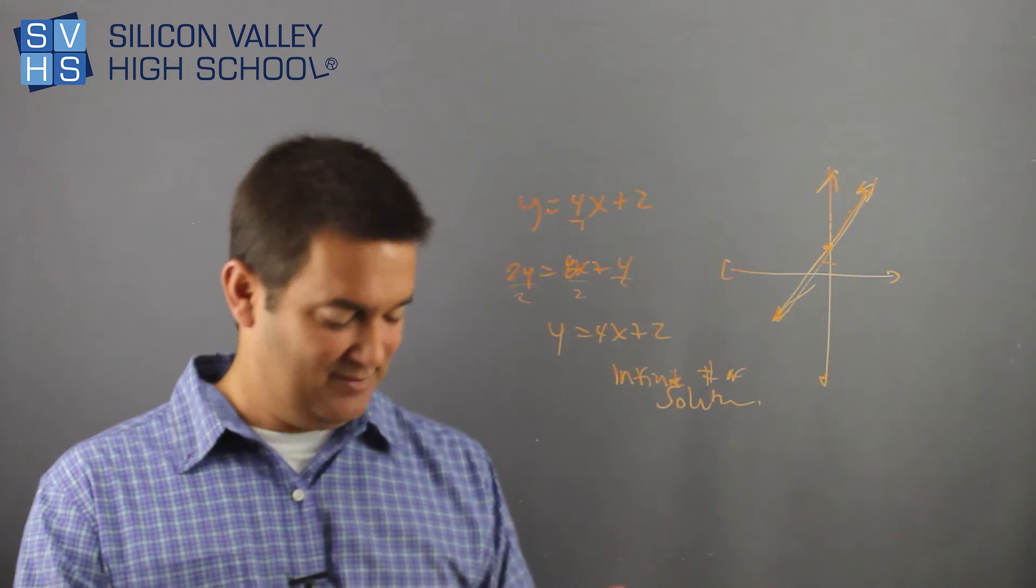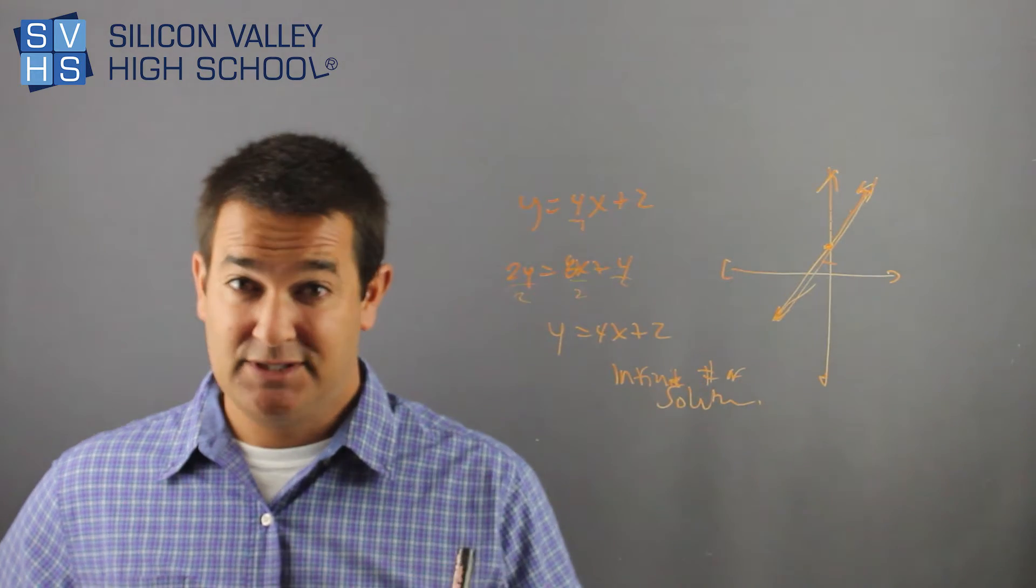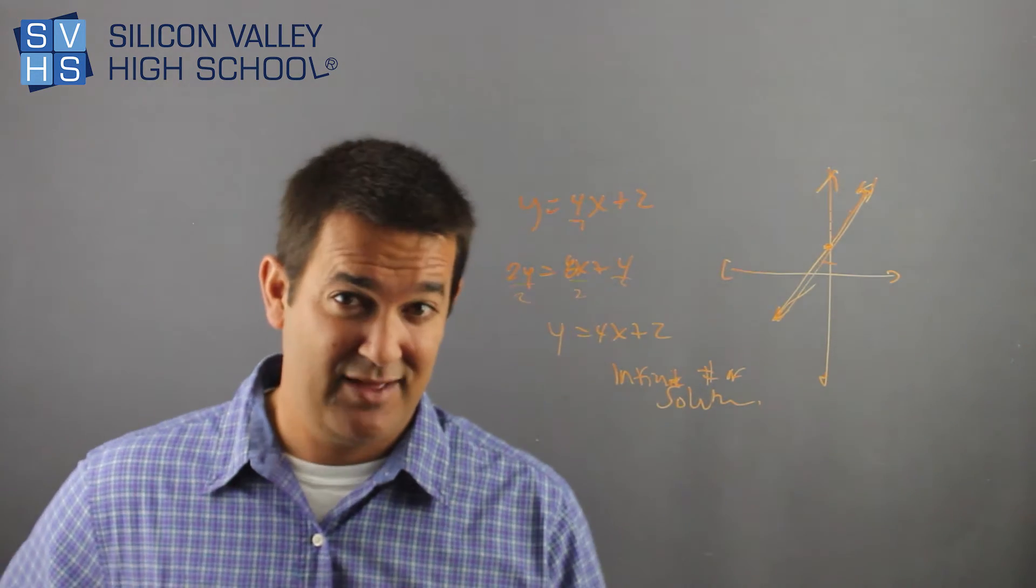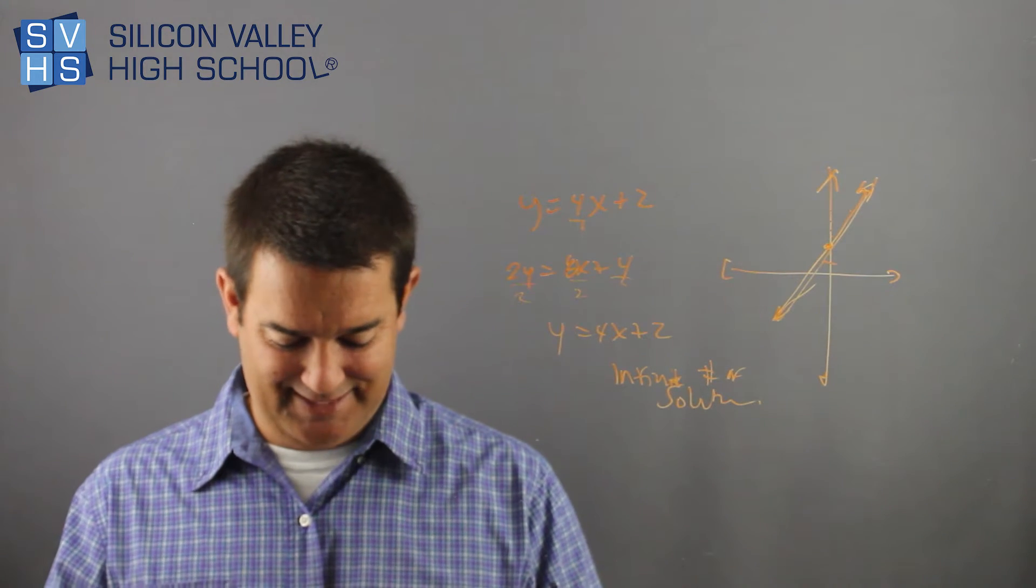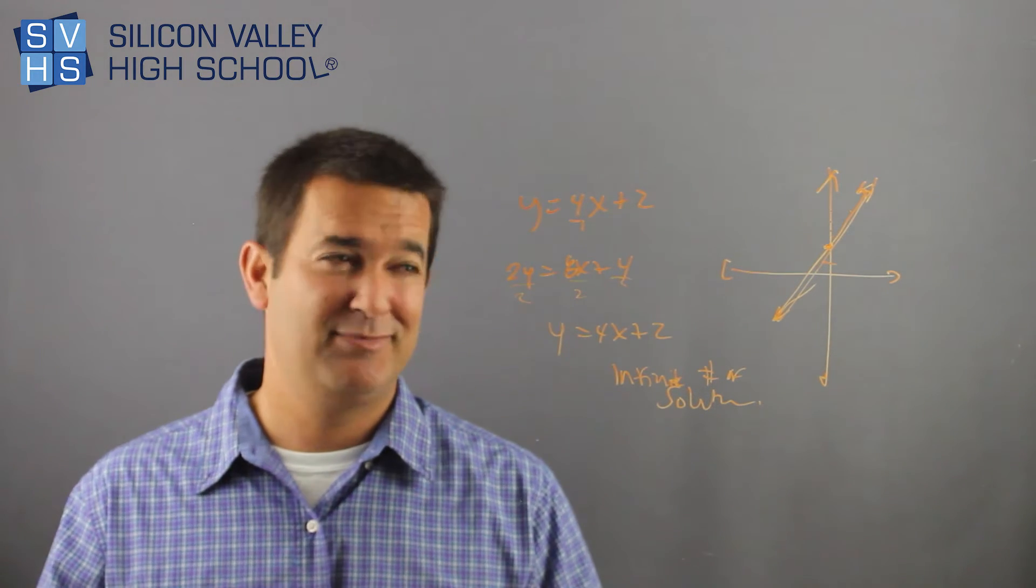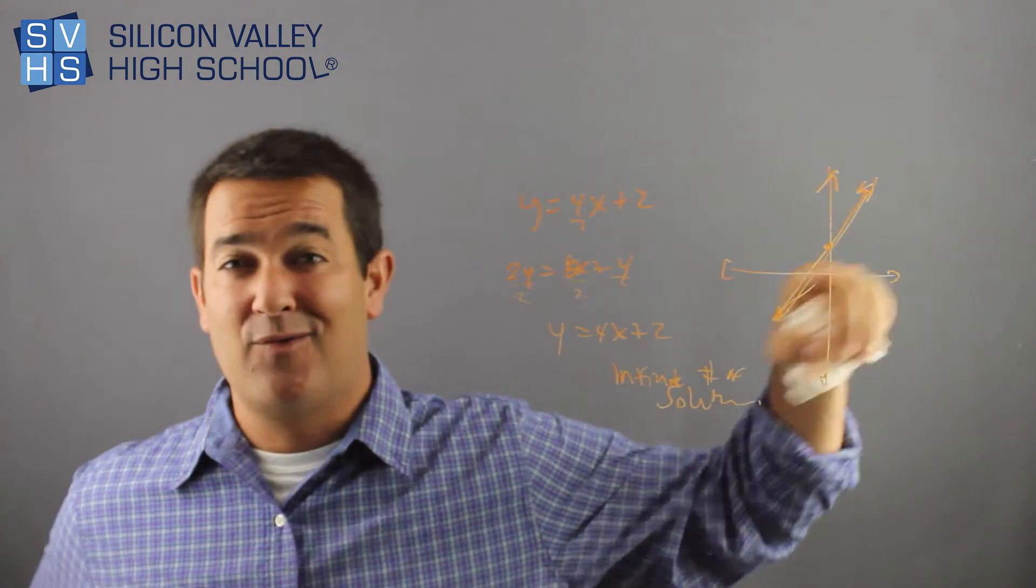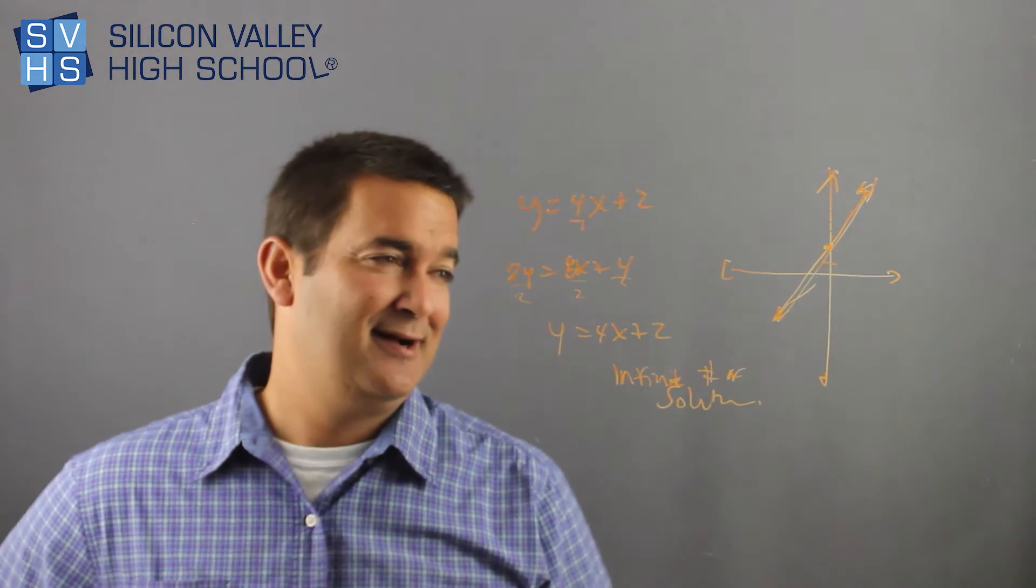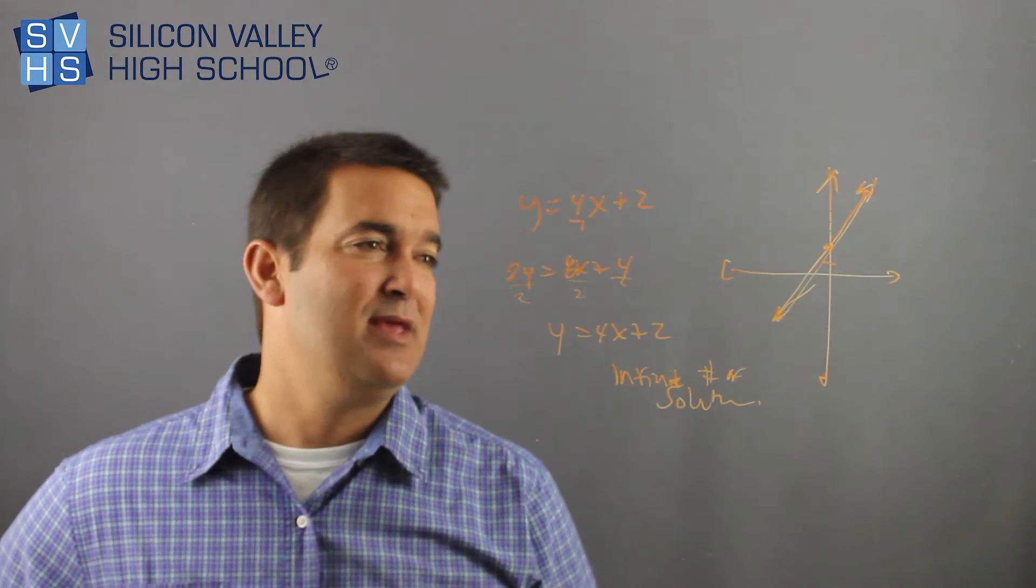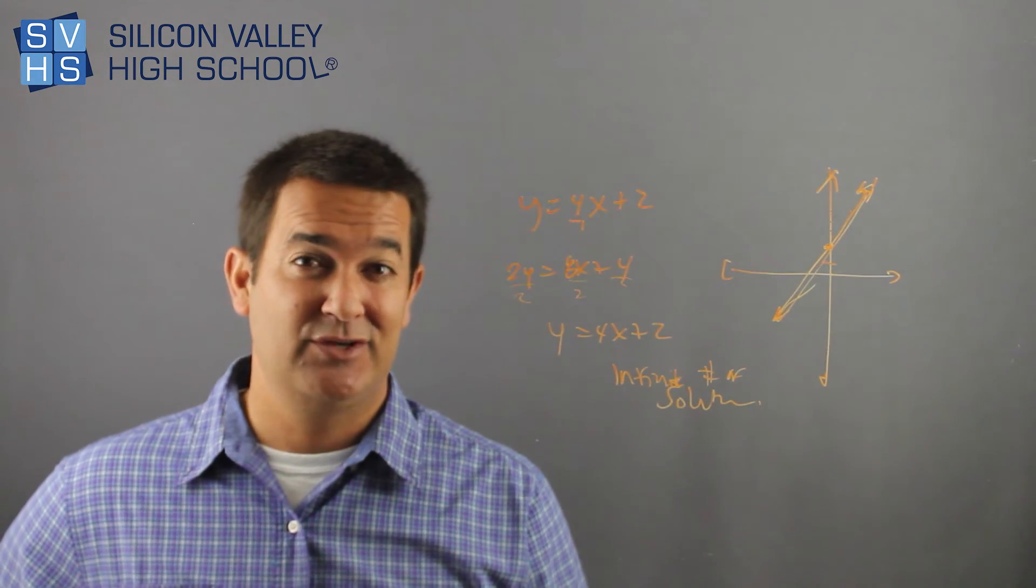So these are systems of equations. Remember, there's other ways to do it. Substitution, you can do the addition method, the elimination method. This is the graphing method. Honestly, I hate to be negative Nancy, but this is the least accurate method because there's just so much room for error when you graph it. Does it cross exactly at a point? What if it's not a whole number? So it's a cool way to visually understand what the solution is to systems of equations.